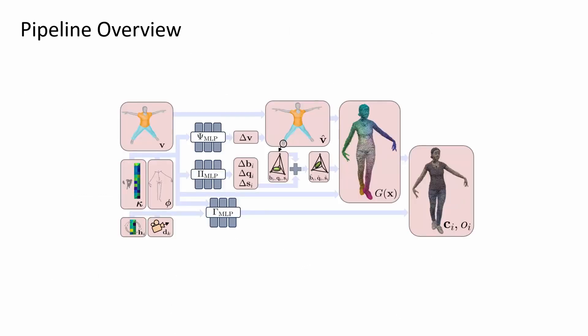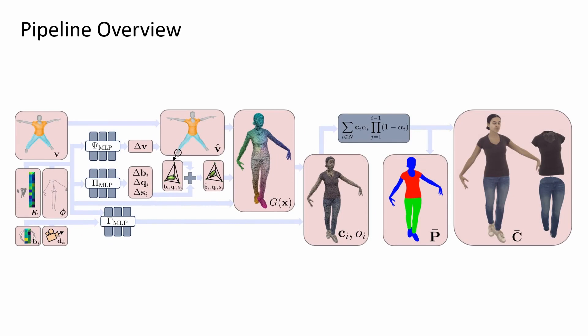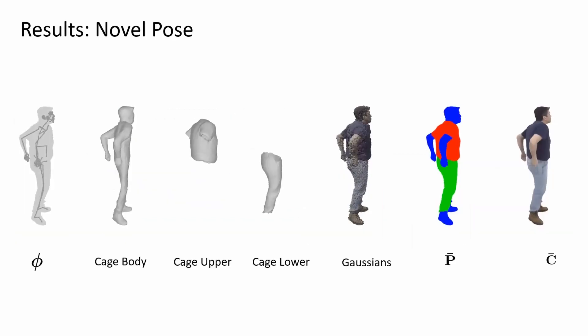The last network, Gamma, predicts per-Gaussian color and opacity. We predict the Gaussian 3D mean based on cage-deformed positions and colorize the Gaussians. Finally, we obtain our predicted image using alpha blending-based volumetric rendering from 3D Gaussian splatting.